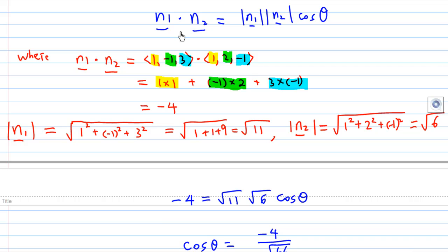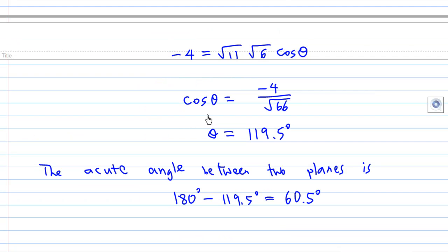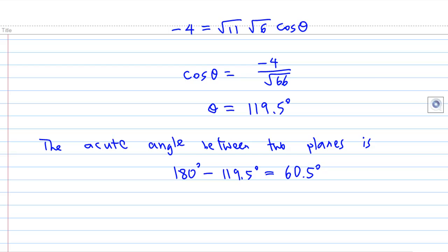Using the equation again, n1 dot n2 equals length of n1 times length of n2 times cosine theta. We find that minus 4 equals square root of 11 times square root of 6 times cosine theta. So cosine theta is minus 4 over square root of 66, and theta is 119.5 degrees.